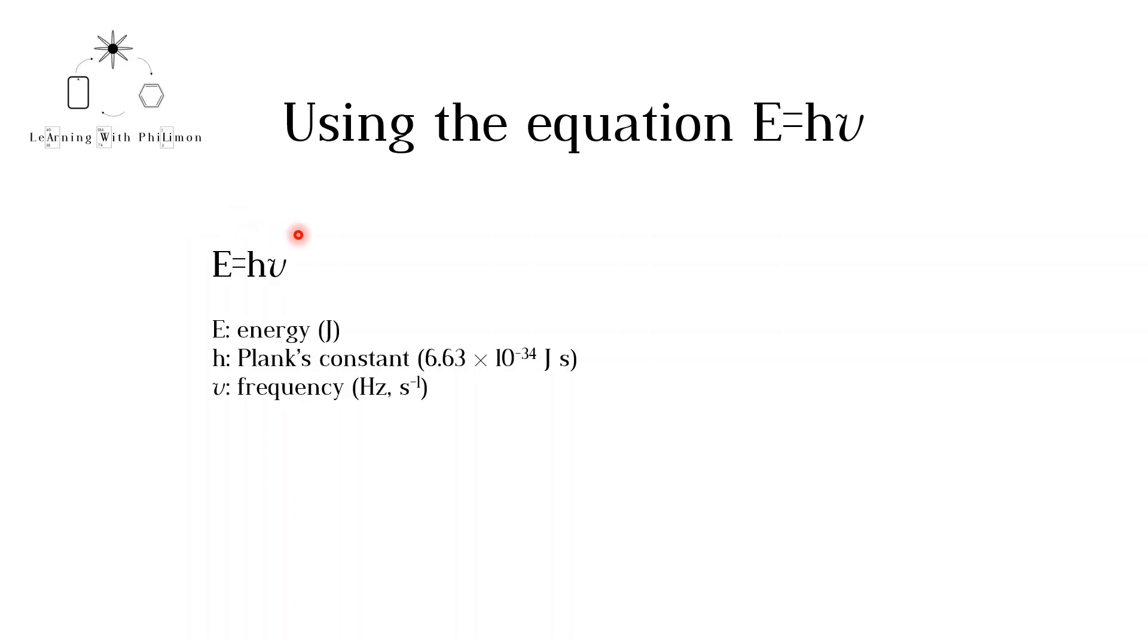The units of energy are joules, j. Planck's constant, which can be found in the data booklet, is equal to 6.63 times 10 to the minus 34 joules seconds. Frequency is measured in Hertz, hz, which is equivalent to s to the minus 1.